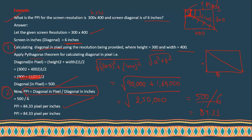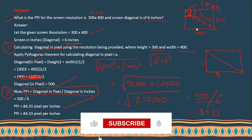First calculate the diagonal in pixels using Pythagoras. If the screen diagonal in inches and the resolution are given, then apply the formula: pixel per inch equals diagonal in pixels divided by diagonal in inches. Thanks for watching — if you like it, please like this video. Thank you.